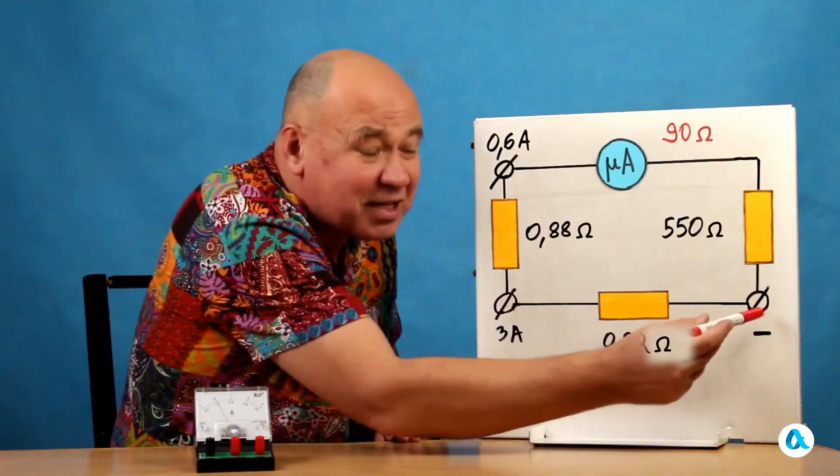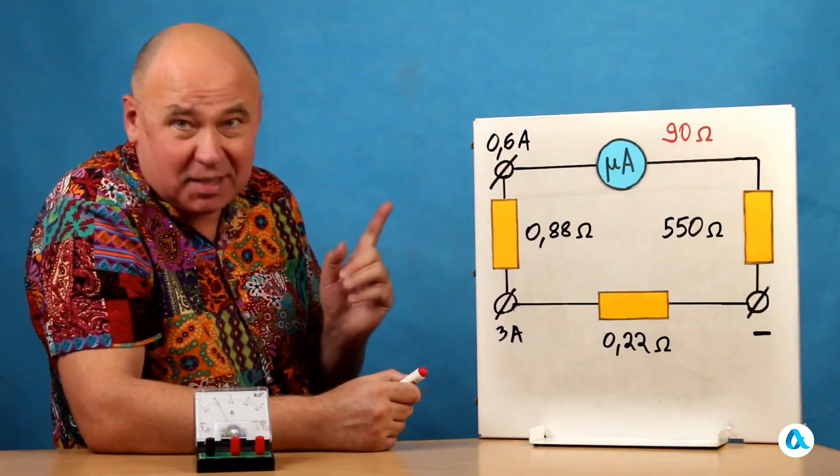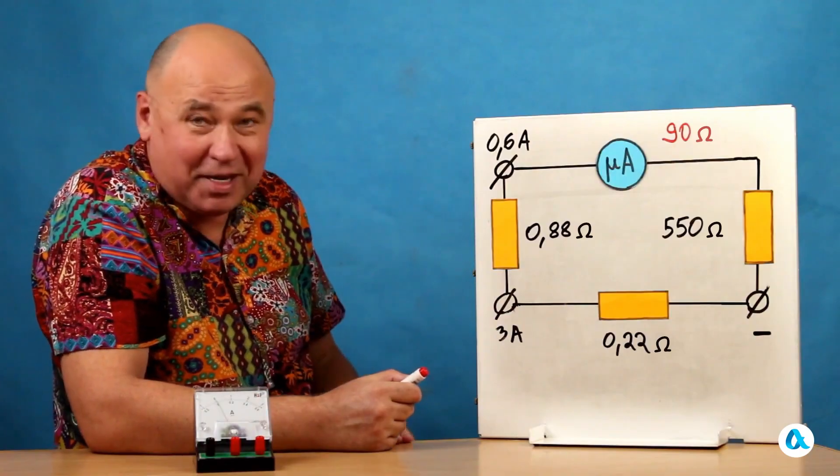If I have 3 amperes flowing like this, then here, only 1 milliampere flows. And that's exactly when the needle deflects to the full scale.